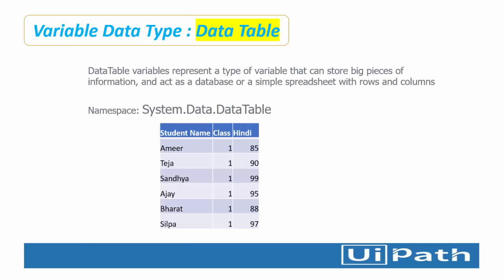For the DataTable variable, the namespace we are going to use in .NET is System.Data.DataTable. For example, the customer is looking for student name, class, and a single subject — Hindi only — and does not want different subjects, total, or percentage. He just requires student name and class, and wants to paste that data into another spreadsheet. This is where we use the DataTable variable type.